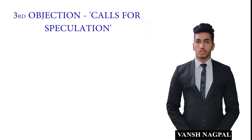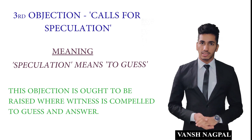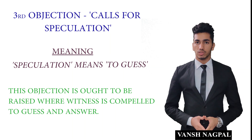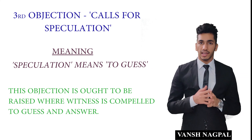The third legal objection is calls for speculation. Speculation means to guess. If a question asks your witness to guess an answer, you can raise this objection. For example, if counsel asks 'Do you think Mr. Mehta could kill or murder someone?' — the witness is being asked to guess. You should raise this objection, and most probably the judge will accept it, because speculation and guessing have very low probative value and are inadmissible.